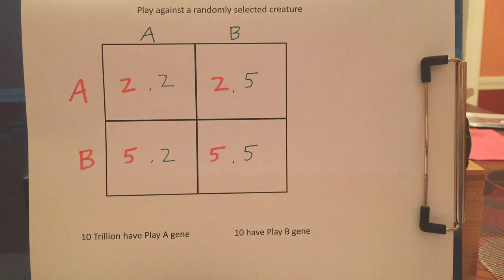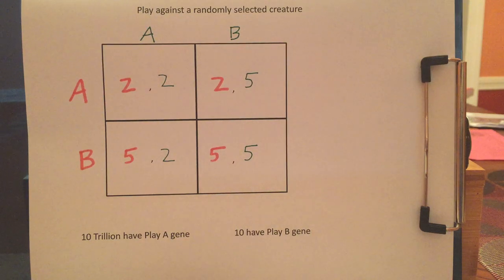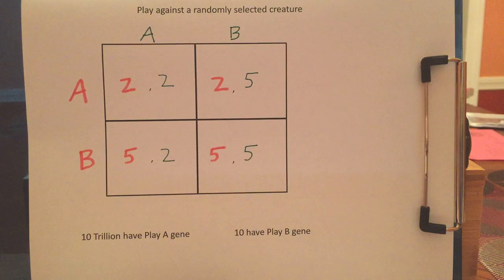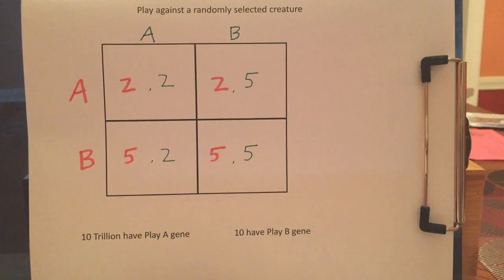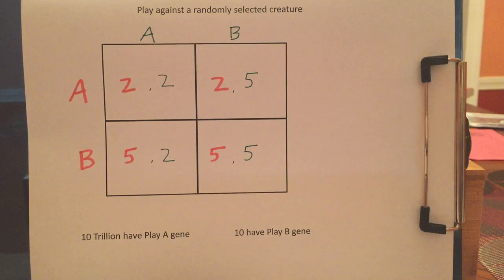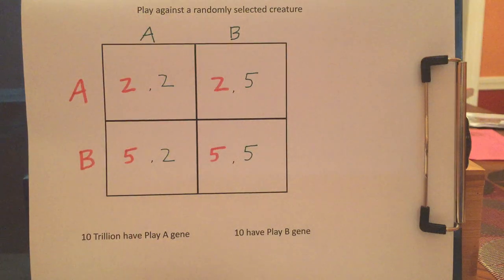So the B's are getting more food than the A's, meaning they'll have more offspring. They'll grow exponentially and eventually take over the colony. So all A in this game is not evolutionarily stable, because even if you start with 10 trillion A's, a few mutations that are B's, or a few invaders that are B's, will be able to take over. If you have a colony of all A's, it's not going to stay that way.